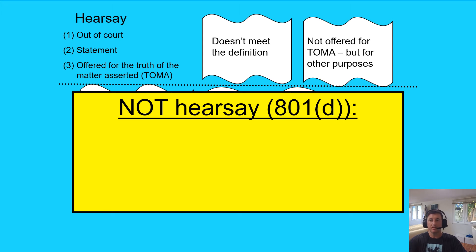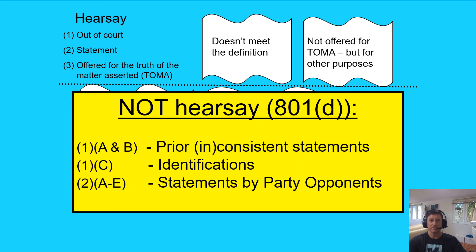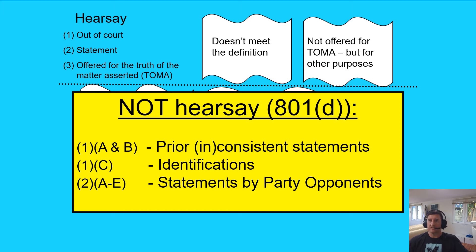Once you get past arguing about the definition, you can go into three pretty bright-line categories of not hearsay defined under 801d. The one we're going to talk about today is statements by party opponents. Notice out-of-court identification — you see it in TV and movies all the time: looking through one-way glass and pointing to the person that did it. That happened out of court. It's conduct, but assertive conduct, because by pointing at number three in the lineup, the witness is essentially saying 'that's the person that did it.'